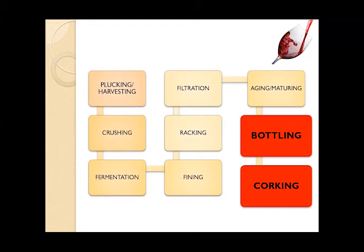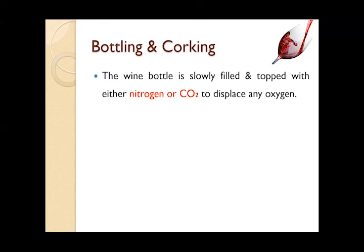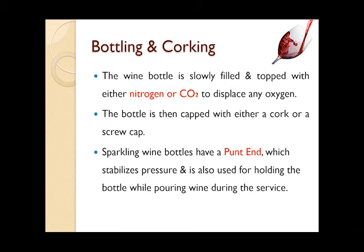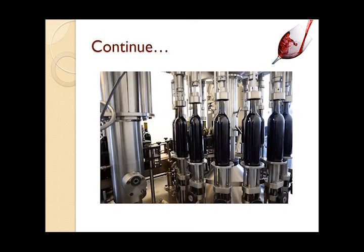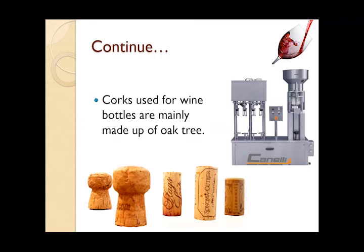The last but not least important process step is bottling and corking. Bottling is a process in which the wine is filled into the bottle. The wine bottle is slowly filled and topped with either nitrogen. The bottle is then capped with either a cork or a screw cap. Wine bottles have a punt end which stabilizes pressure and is also used for holding the bottle while pouring wine during service. The corks used for wine bottles are mainly made of oak wood tree, though modern corks can also be made of fiber.